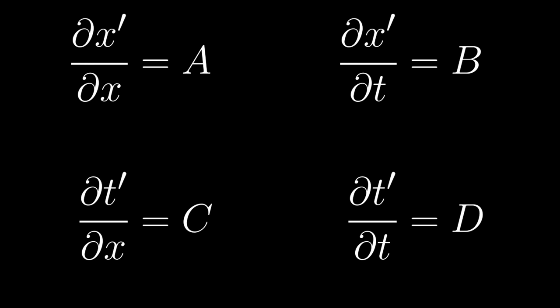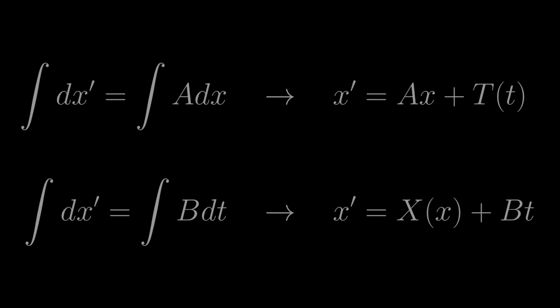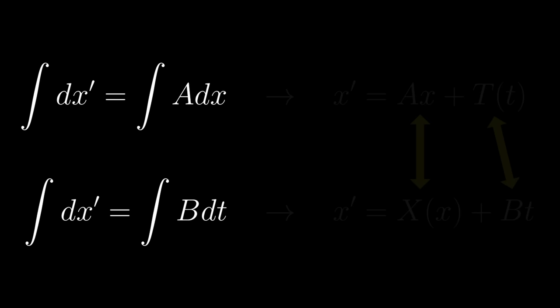Now let's take the antiderivative of the first two expressions. The first case tells us that x prime is equal to a times x plus T of t, where big T of t is just some arbitrary function of Annie's time coordinate. The second case then tells us that x prime is equal to big X of x plus b times t, where big X of x is just some other arbitrary function of Annie's spatial coordinate. If we then compare these expressions side by side, it is easy to see that there is only one possible solution. x prime is equal to a times x plus b times t.